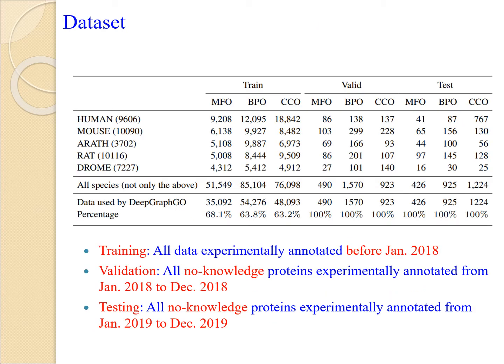This table shows the statistics of training, validation, and testing sets. We used all experimentally annotated data before January 2018 as the training set, all new proteins experimentally annotated in 2018 as the validation set, and all new proteins experimentally annotated in 2019 as the testing set. For validation and testing sets, we used the same 17 target species as CAFA-4. Note that DeepGraphGO was trained by proteins in the 17 target species appearing in both the training set and the PPI network, while competing methods based on protein sequences were trained by proteins in the whole training set.